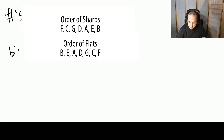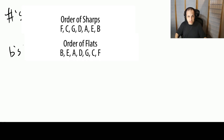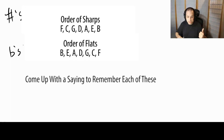The order of flats is B, E, A, D, G, C, F. How are these two related? They are inverses of each other. If you take F, C, G, D, A, E, B and flip it backwards, you get B, E, A, D, G, C, F. Just like when learning to read music, I suggest coming up with a saying to memorize these — especially F, C, G, D, A, E, B. For example: 'Fat Children Gather Daily At Every Basketball Game.' That's F, C, G, D, A, E, B.